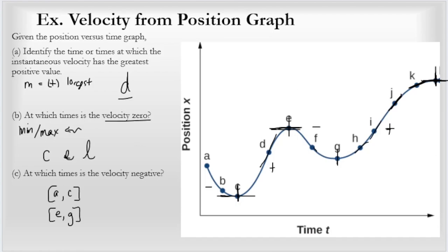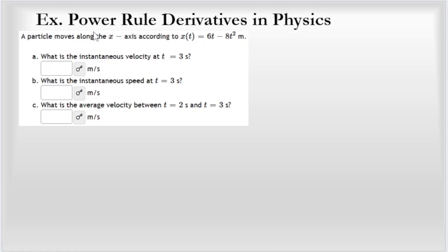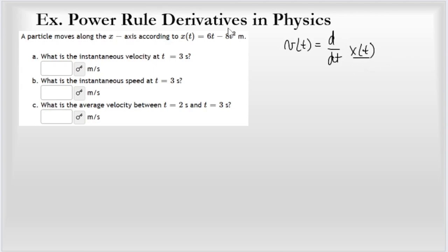The next example deals explicitly with the derivative of a function dependent upon time. A particle moves along the negative x-axis according to a position equation with respect to time: x equals 6t minus 8t squared, in meters, where x is position and t is time. In physics, the instantaneous velocity is the time derivative — d by dt — of the position function. Since we're given the position function, we find instantaneous velocity by taking its time derivative.